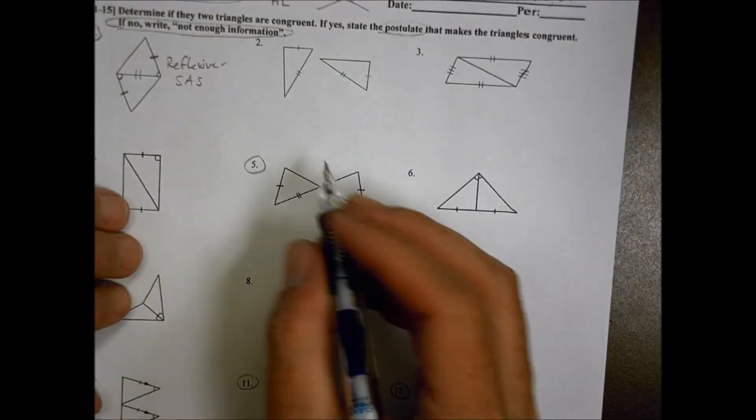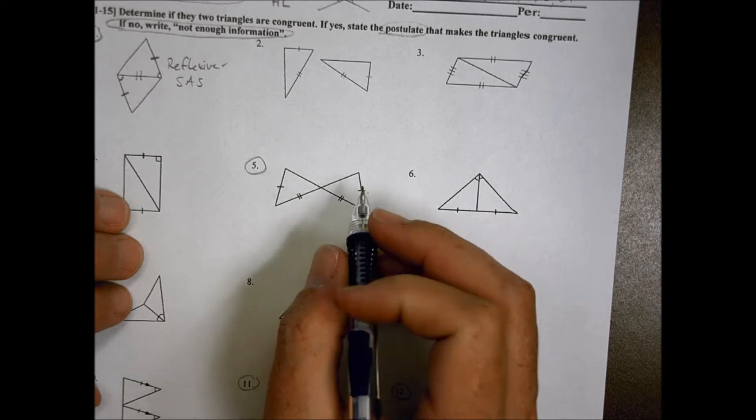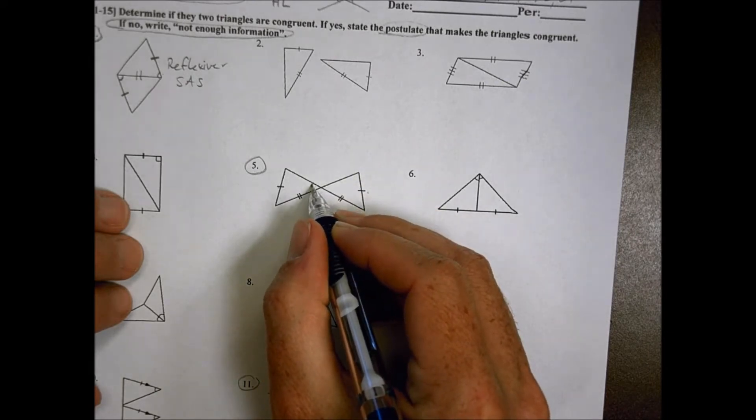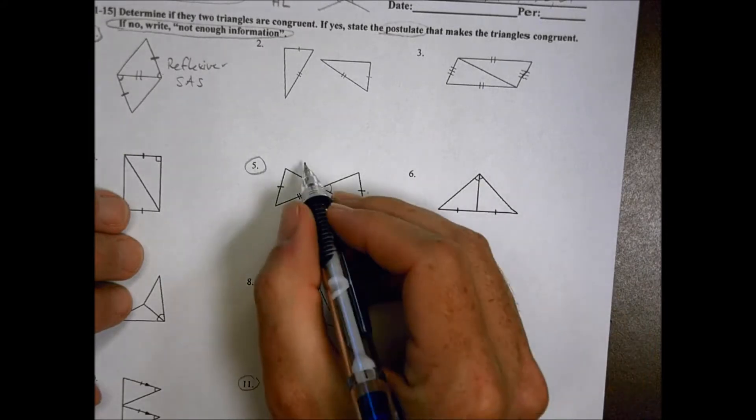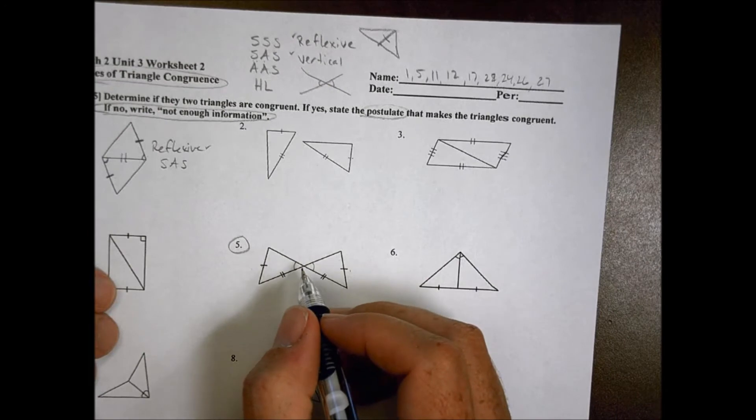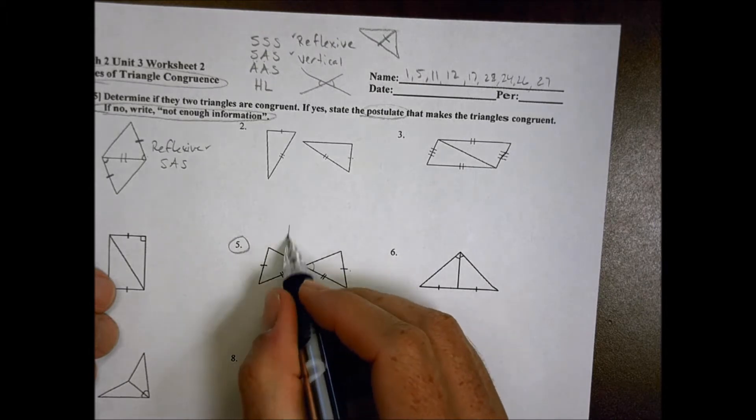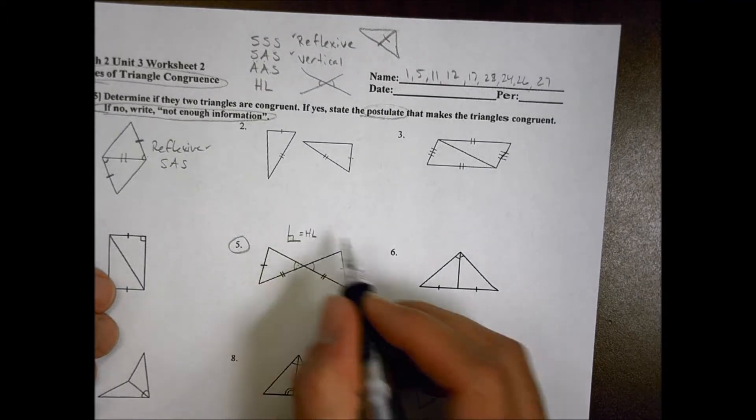For number five over here, I already have a side and a side. What I don't have is an angle. Now, if I use this one here, I could say that this is an angle and that's true. The problem with that is that we look back up here. I don't ever have a side side angle or an angle side side. It doesn't work that way unless I have a 90 degree, in which case I would use a hypotenuse leg thing.